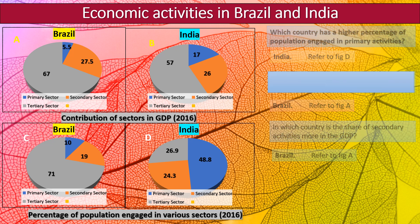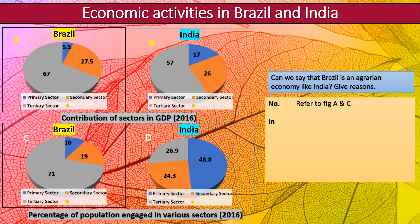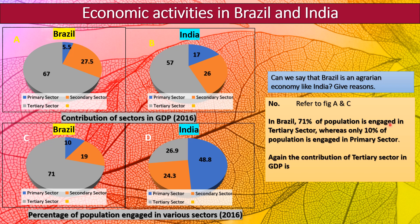The next question: can we say that Brazil is an agrarian economy like India? No, we cannot. Because almost 71% of Brazil's population is engaged in the tertiary sector and only 10% in the primary sector. Furthermore, the contribution of the tertiary sector to Brazil's GDP is 67%, whereas the contribution of the primary sector is only 5.5%. So Brazil cannot be called an agrarian country.